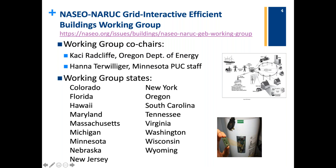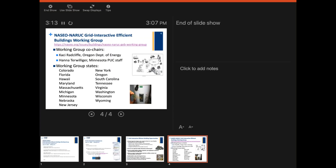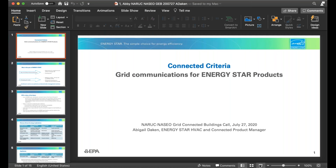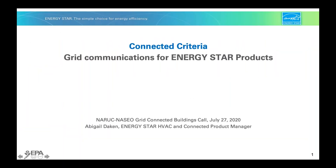Let me take a moment to introduce our speakers today. Abigail Dakin manages the requirements for Energy Star heating, cooling, and water heating products, and the grid responsiveness of elements of all energy specifications. Before joining EPA in 2010, she has done research in physics and sustainability. She has also worked in electronics design and on standards. She will be first up to bat.